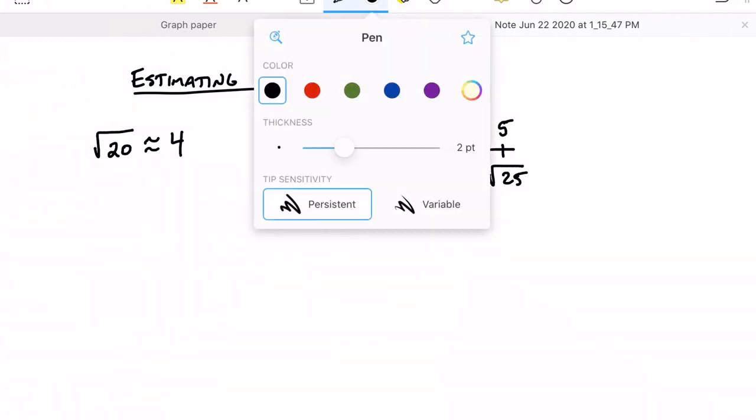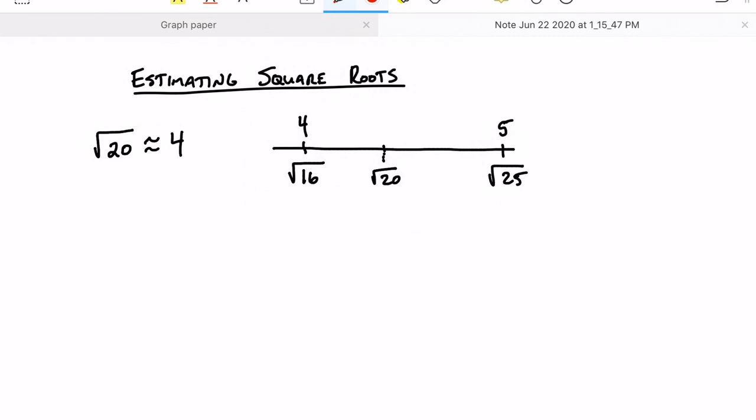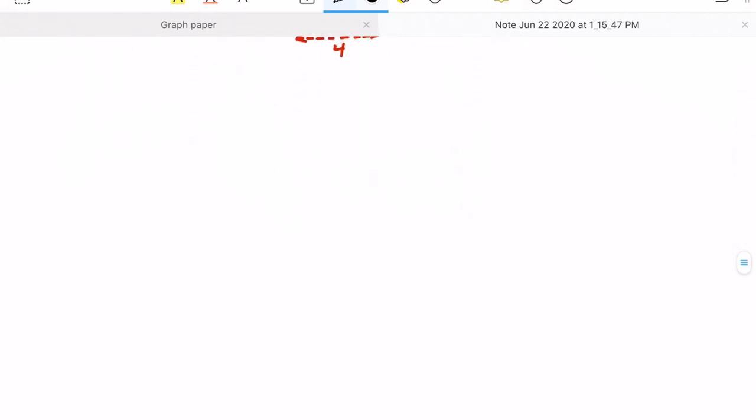To get an estimate of what that would be, we need to look at the distance in between these numbers on this number line. The distance between 16 and 25 is 9. The distance between 16 and 20 is 4. So logically, we can conclude that the square root of 20 is 4 and 4 ninths of the way between 4 and 5. So for an approximation, we could say that the square root of 20 is 4 and 4 ninths. Now, if we were using a calculator, it's actually 4.47, which is really close to that estimate of 4.44.